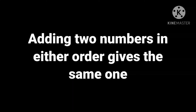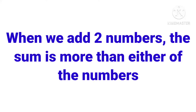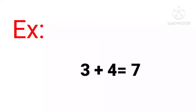Next, adding 2 numbers in either order gives the same answer. For example, 5 plus 2 equals 7, or 2 plus 5 equals 7. Very good. Next, when we add 2 numbers, the sum is more than either of the numbers.